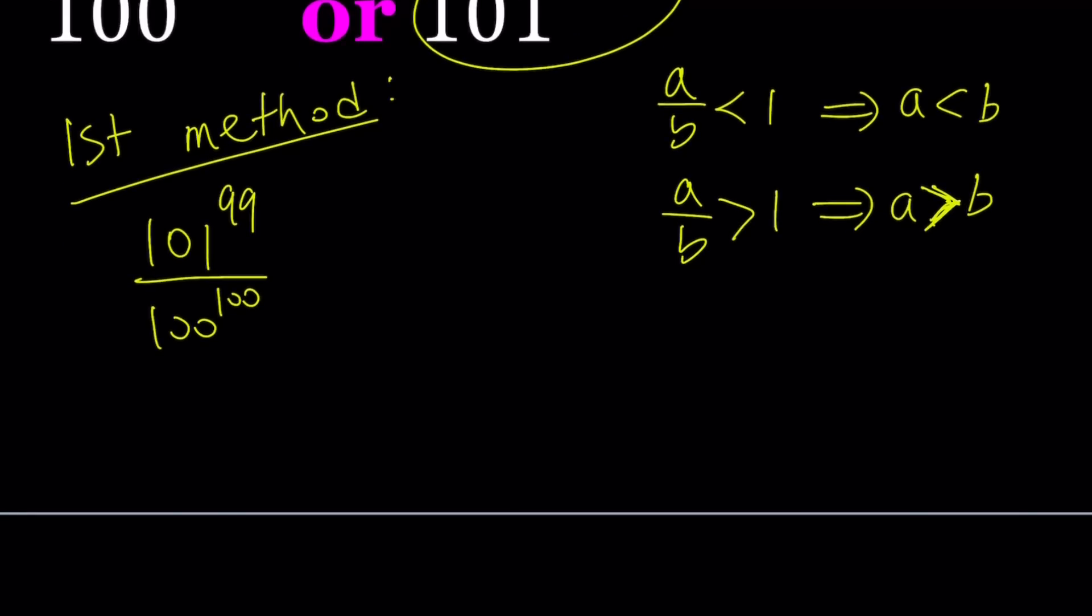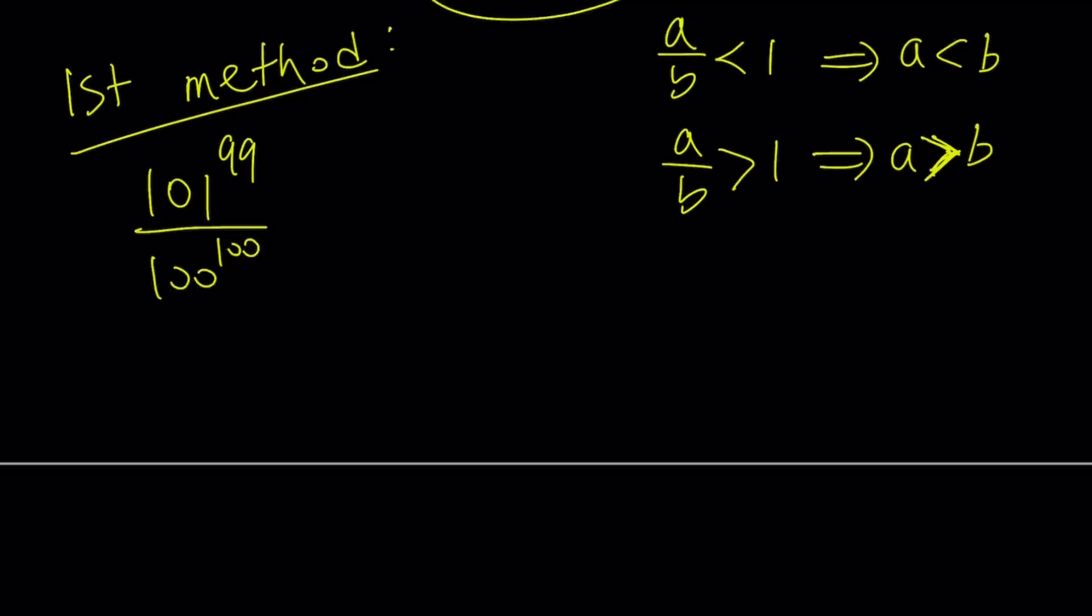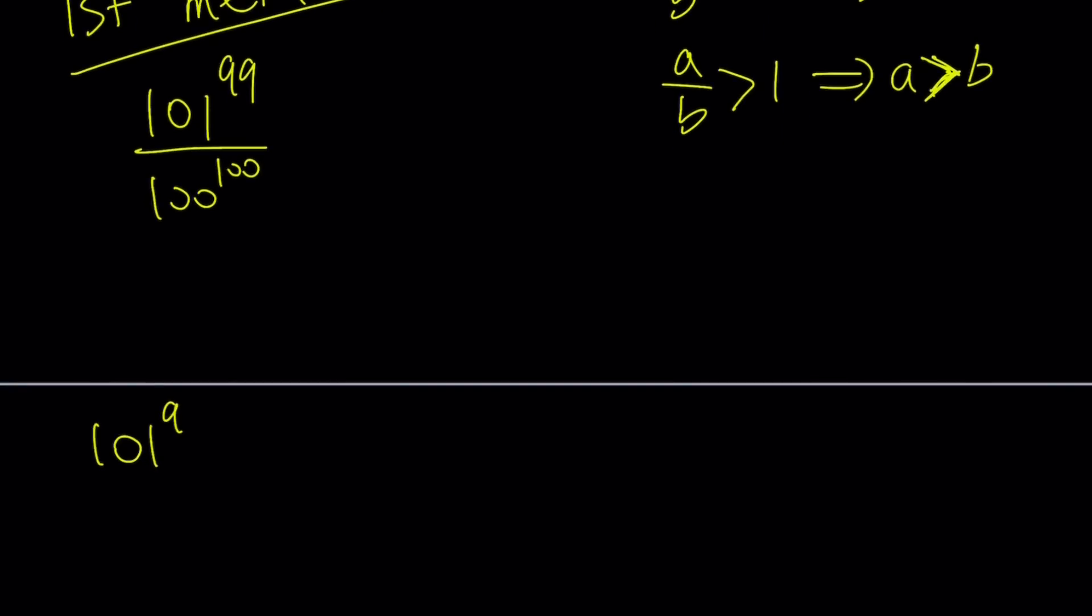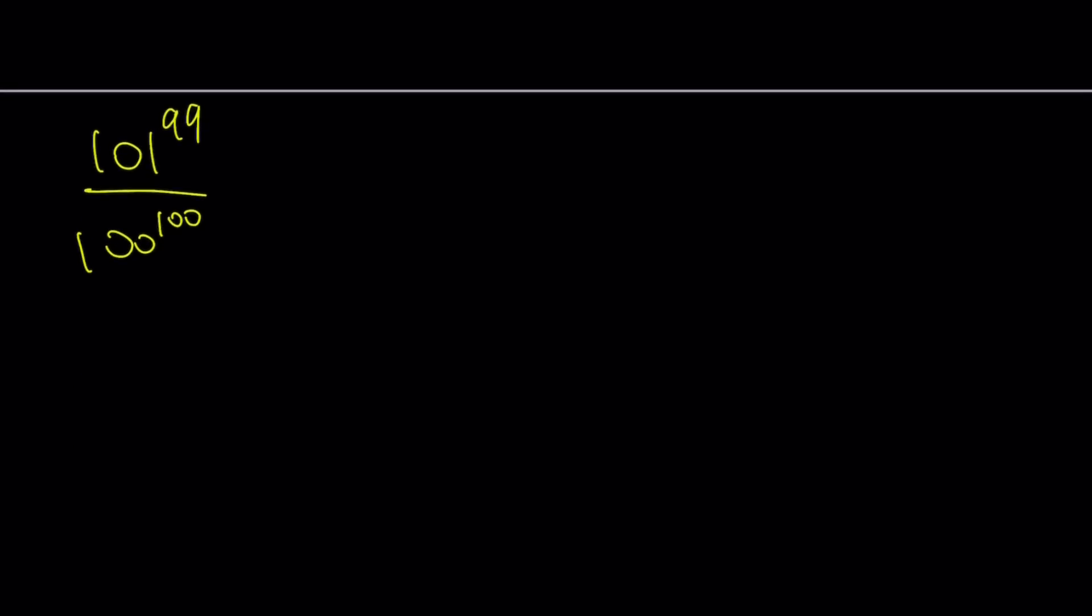Let me write this expression. I want this number to be either less than 1 or greater than 1. Let's go ahead and write it as 101 to the power 100 divided by 100 to the power 100 so we can get the same exponent. That's the motivation. But that just means I have to divide by 101, which I can do by multiplying by the reciprocal.